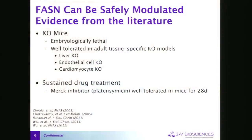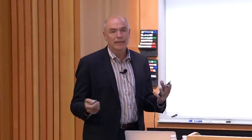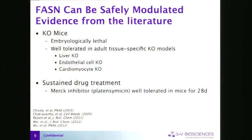Second, why do we think we can safely modulate FASN? Evidence comes from knockout mice. You cannot knock it out from the whole genome — it is embryonically lethal. However, adult liver-specific knockouts, endothelial cell knockouts, and cardiomyocyte knockouts look perfectly fine until you put them under stressful conditions. The liver knockout mice look normal until you put them on a zero-fat diet, at which point they become steatotic. Other inhibitors like platensomycin have been given to mice at high doses for a month with animals perfectly fine and well-tolerated.